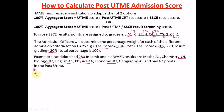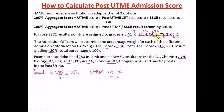The candidate scored 280 in JAMB. To get the 50% component, divide 280 by 8: 280 ÷ 8 = 35%. For the WAEC component: Maths A1 = 6, Chemistry C4 = 3, Biology B2 = 4, English C5 = 2, Physics C6 = 1. The total grade points are 6 + 3 + 4 + 2 + 1 = 16.